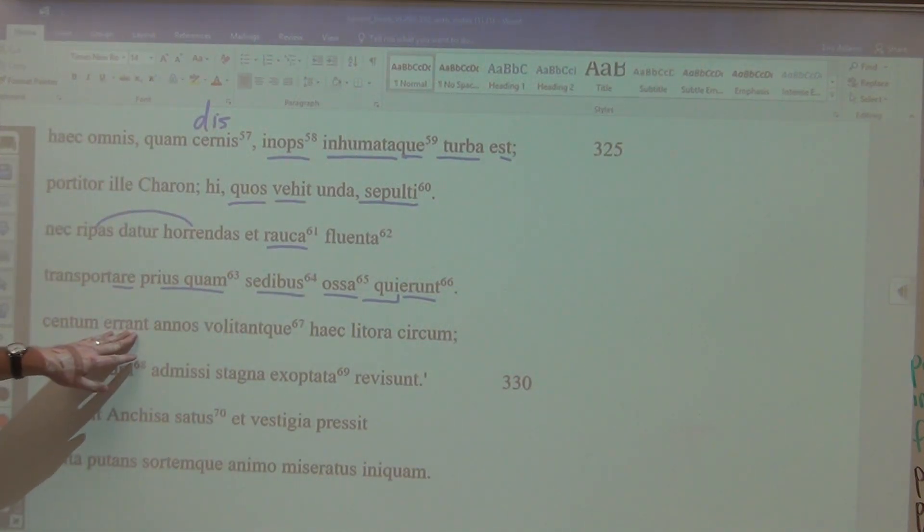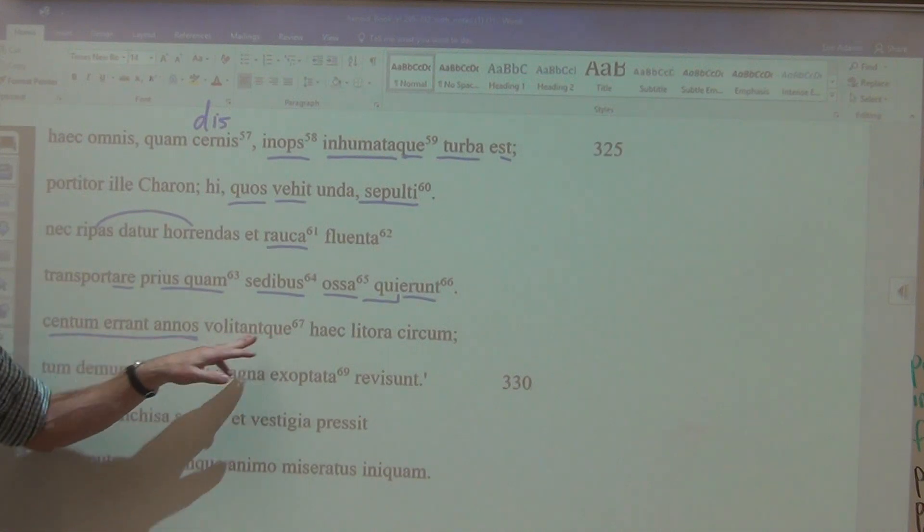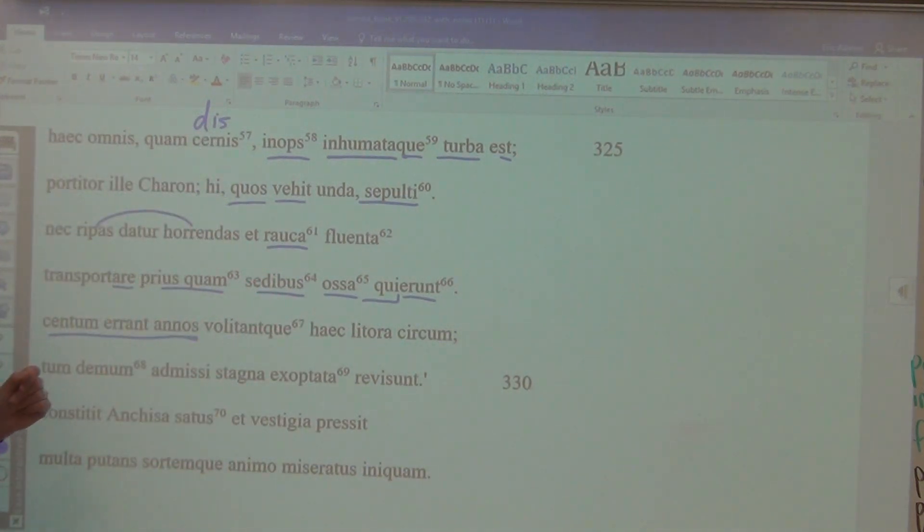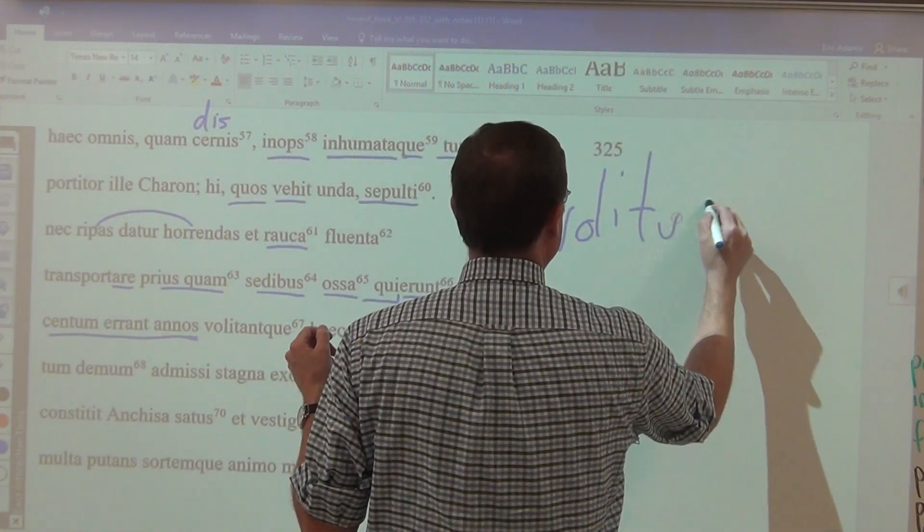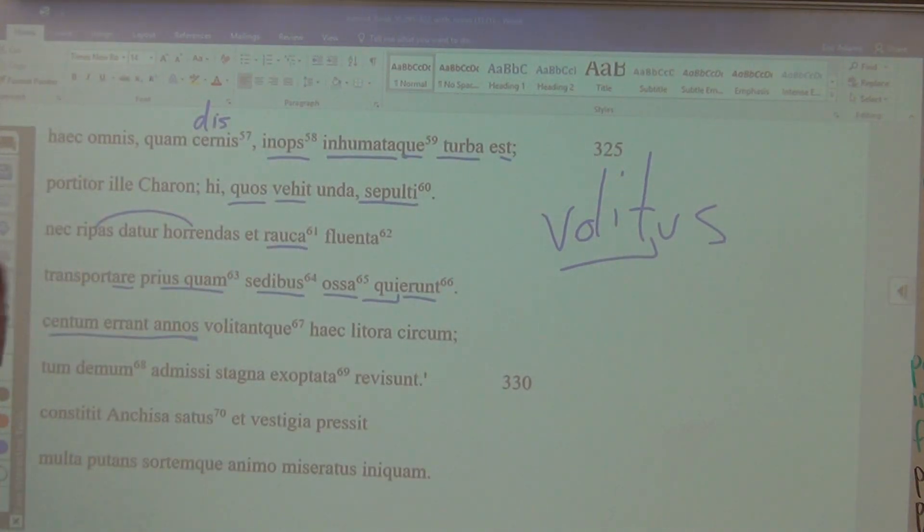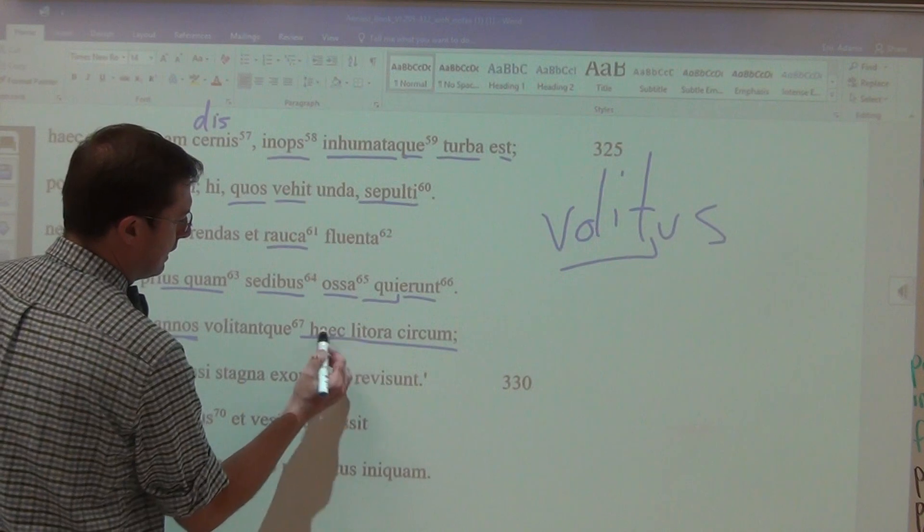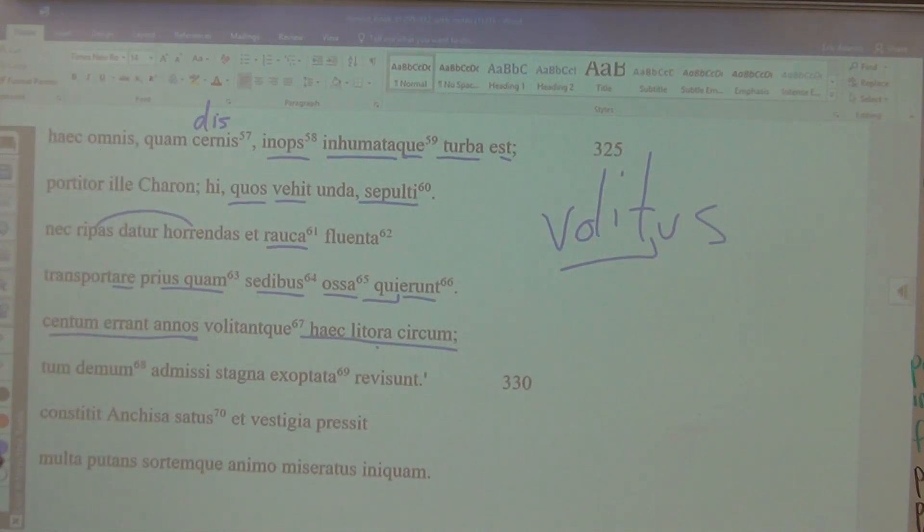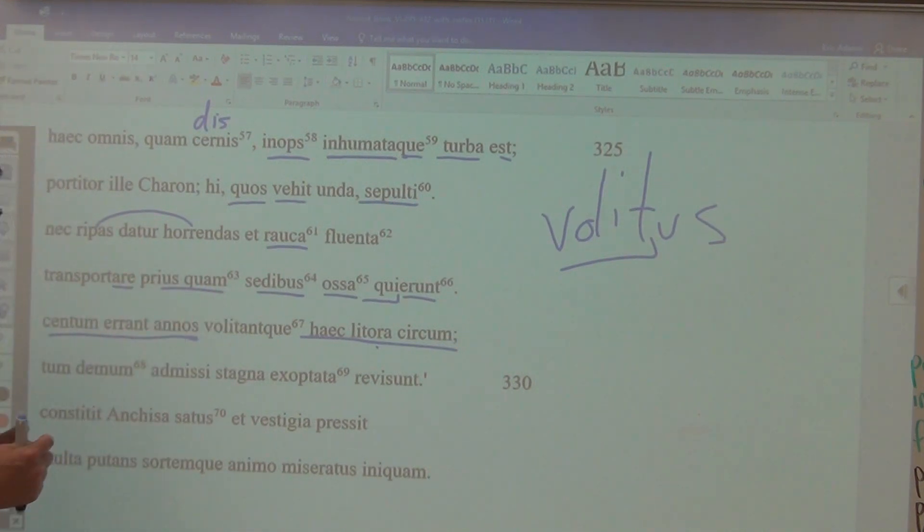They wander, duration of time and extent of space as always expressed in the accusative case, for 100 years, and they fly, but it is not volo. Instead, this is a verb that is volo volare volavi volatus. And you again take the frequentative of it, and to fly repeatedly is to flit, flutter if you would like. And they flit about, they flutter about around these shores. So they, for 100 years, are going to be ghosts, essentially, unrequited or unsatisfied spirits because they haven't found their home in the other world.